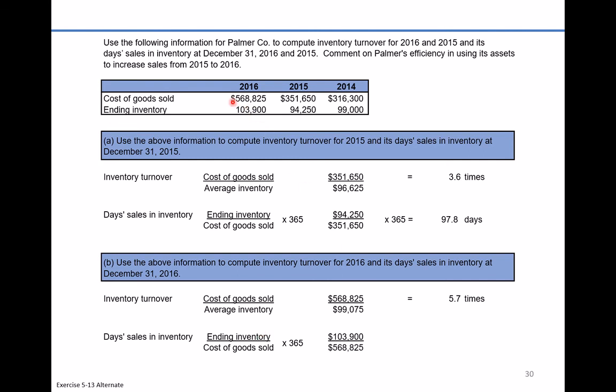So we have $103,900 divided by $568,825, times 365, and things have improved quite a bit — inventory is only sitting on the shelves for about 66.7 days. The management can take comfort in knowing things are getting better; they're becoming more efficient at managing their inventory, getting in more of what customers want, and marking down old items to move them out.